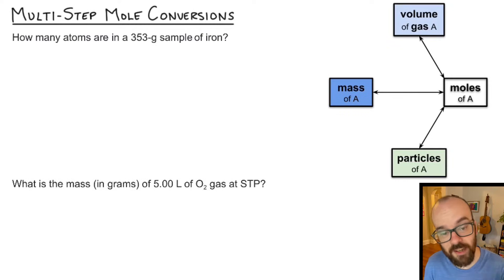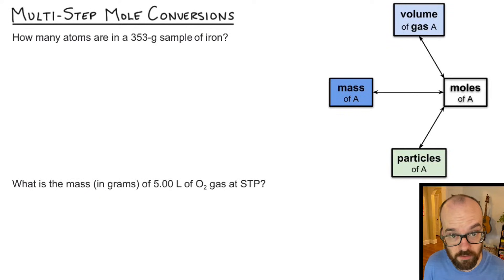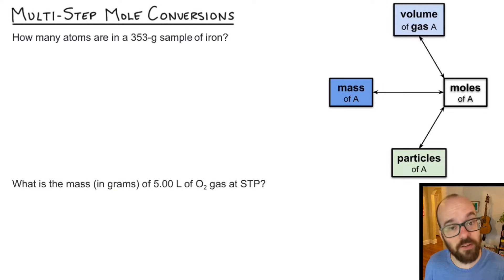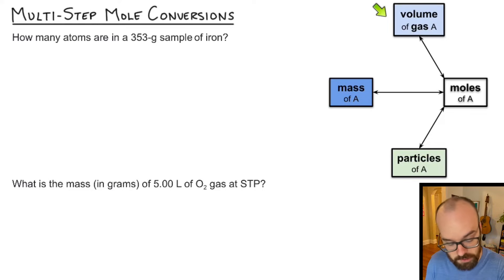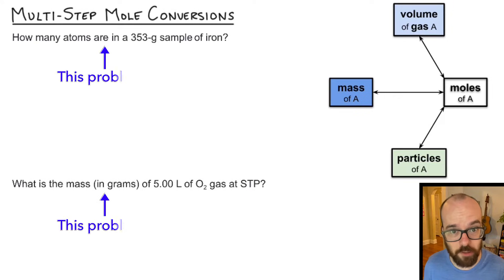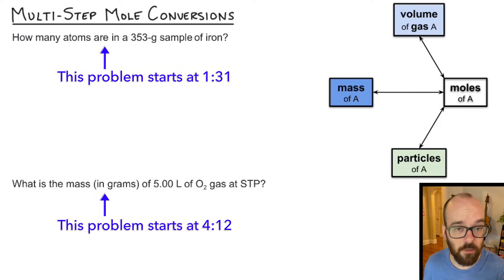In this video we're going to do some multi-step mole conversions. Both problems we work are going to be two-step conversions, so we'll convert from something to moles and then from moles to something else. To help us think through these problems we're going to use something called a stoichiometry map to map out the conversions. If you'd rather jump straight to a problem, here are the timestamps for both problems.